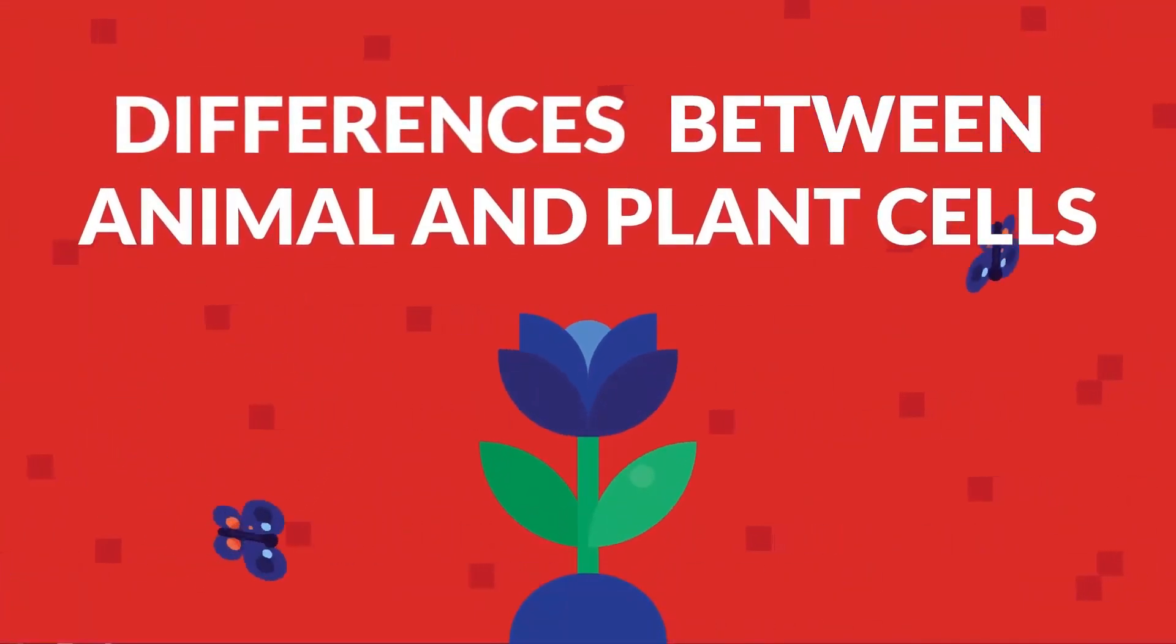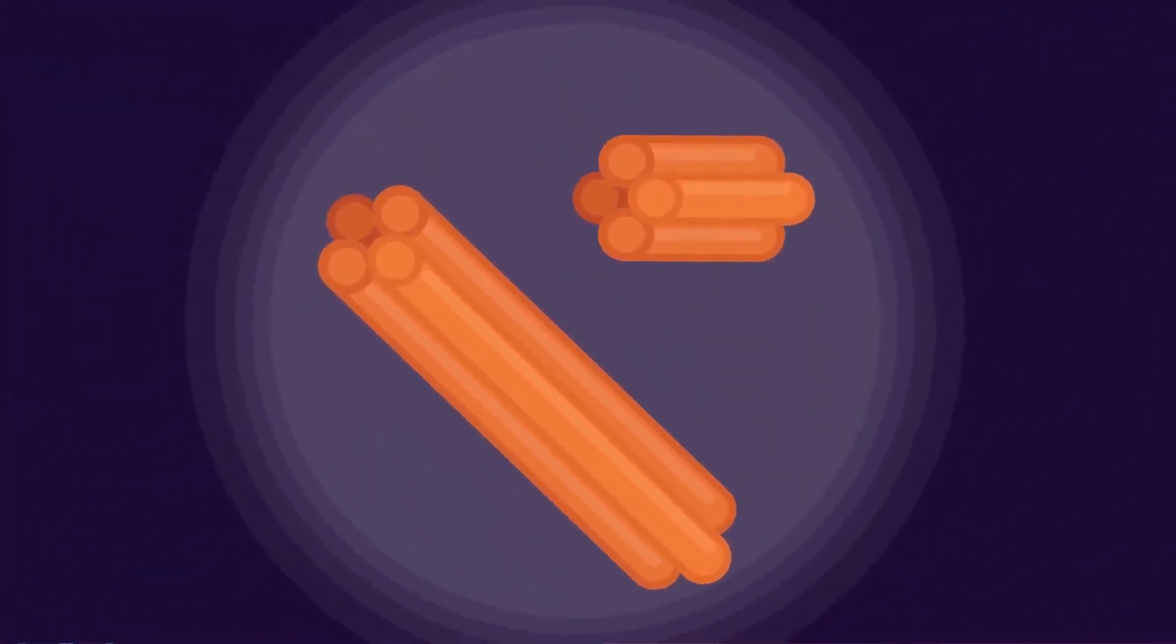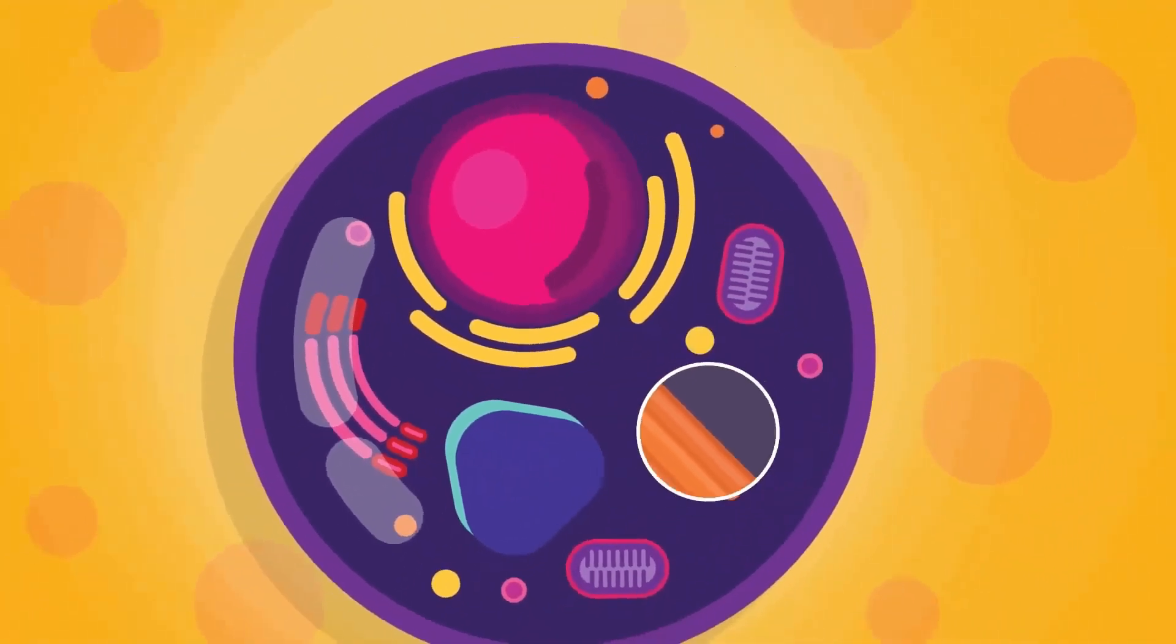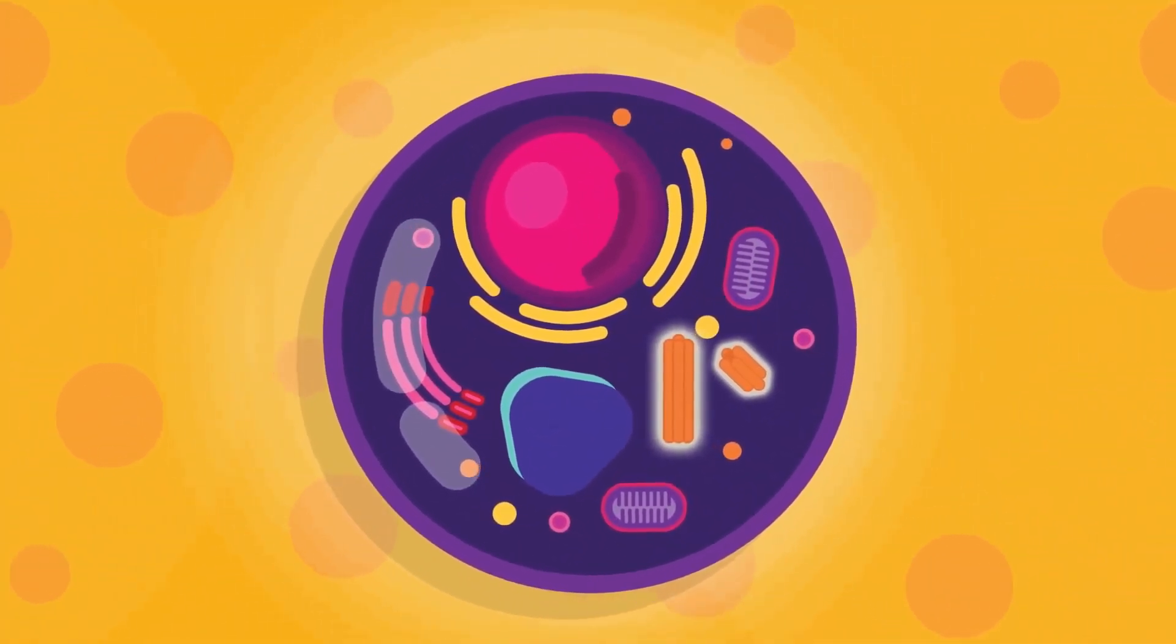Differences between animal and plant cells. A structure present in animal cells and not in plant cells is the centriole. Under the microscope, centrioles look like small structures close to the nucleus.